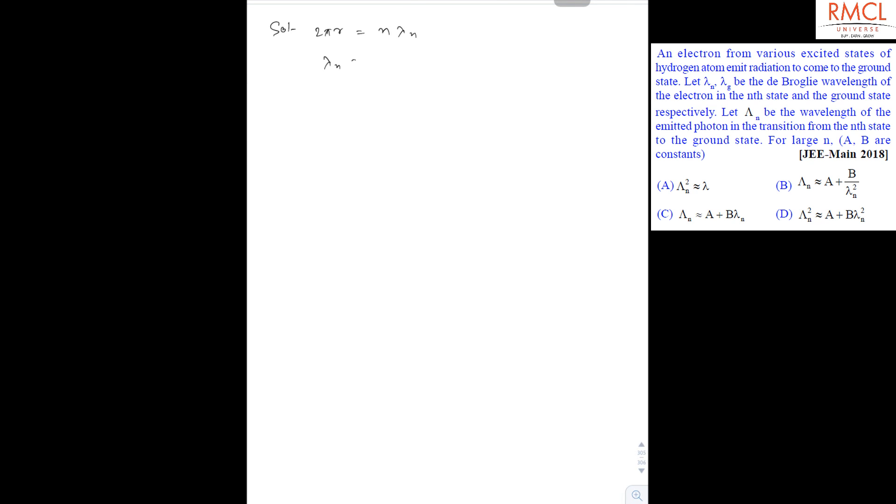So lambda n will be equal to 2 pi r upon n, and it is equal to 2 pi r0 n square upon n. So it is 2 pi r0 n.